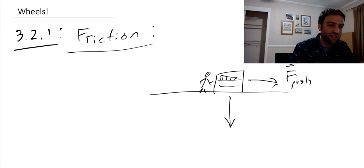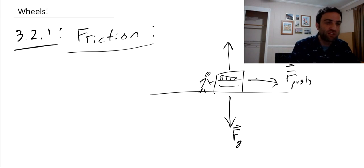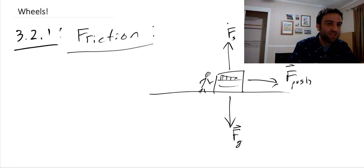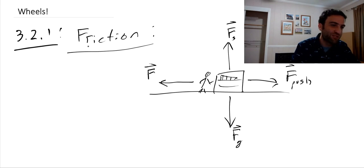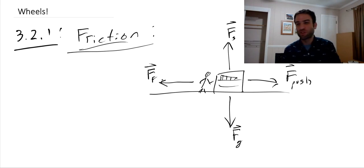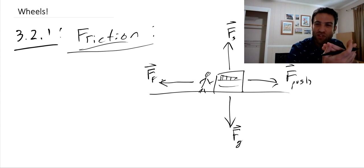We already know there's a force due to gravity pushing it down, and a normal force — a support force — from the ground pushing the object back up. And there has to be something balancing out the push force as well. That force is the force of friction: an interaction between the object and the surface that exerts a force in the direction that opposes any motion of this object.